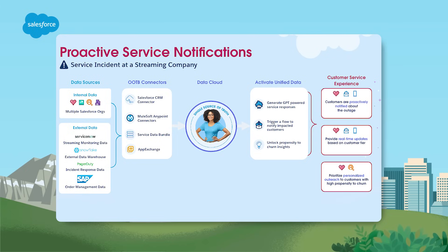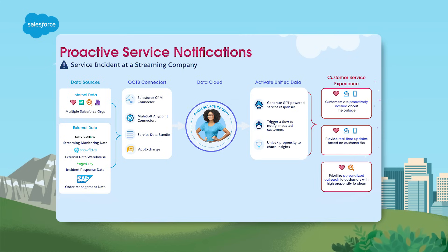Let's focus on an industry specific use case. Imagine a streaming service that a company suddenly fails. The company needs to quickly identify and communicate with the impacted customers. Using Data Cloud, a company pulls together data from their Salesforce orgs and external data in their order management system to determine which customers could be affected by the failed server. Next, by adding data from ServiceNow, a system monitoring tool, the company is aware of the incident when it happens and can pinpoint exactly who was affected by the outage.